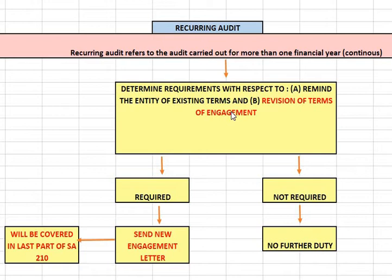The second requirement is to check for any revision. The auditor needs to check whether there is any requirement for revision of the terms of the audit engagement. Suppose the answer to this question is yes — it is required — the revision of terms of engagement is required.